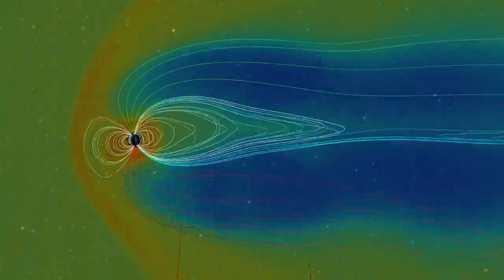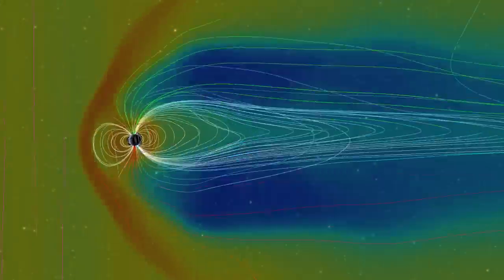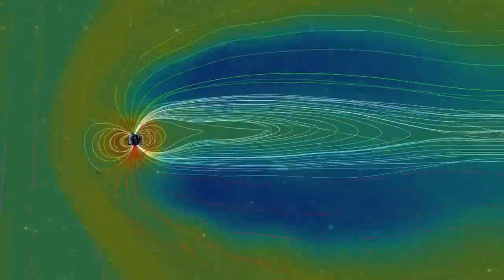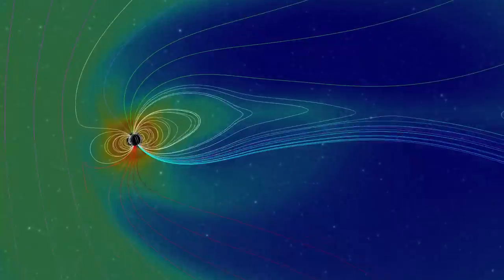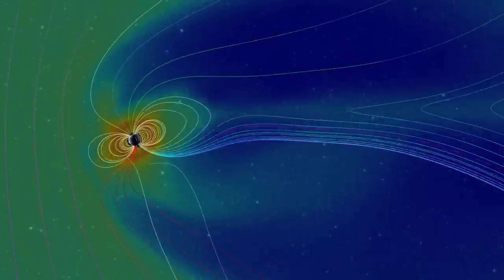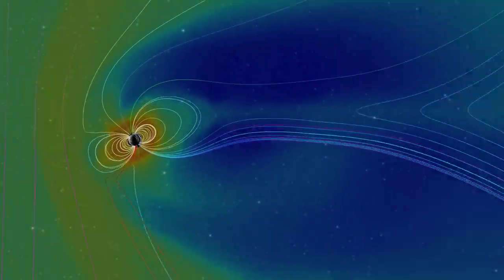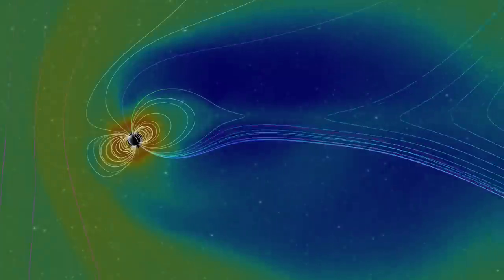A typical coronal mass ejection pushes Earth's field in and lengthens its tail. The magnetosphere remains largely intact.